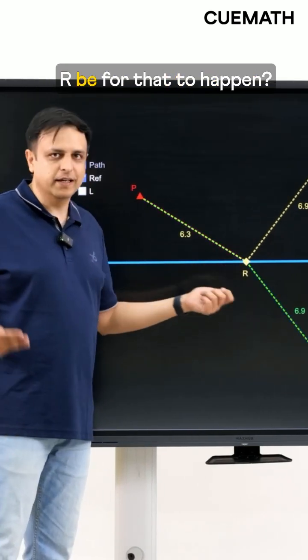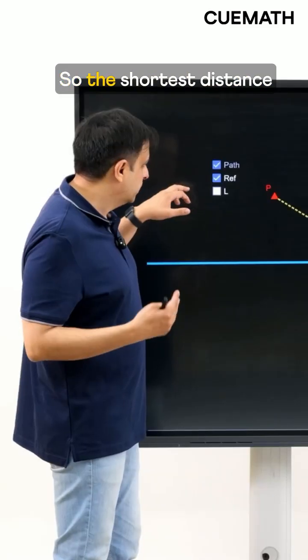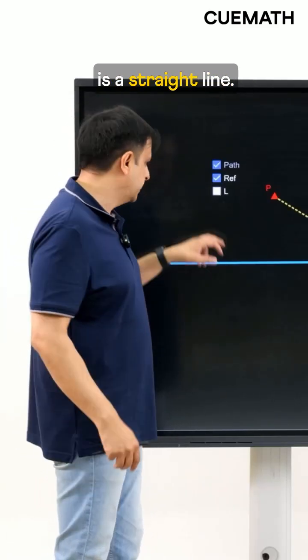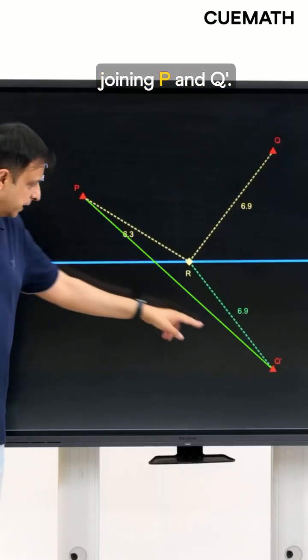Now where will that point R be for that to happen? So the shortest distance between two points is a straight line, so just think of the straight line joining P and Q dash.